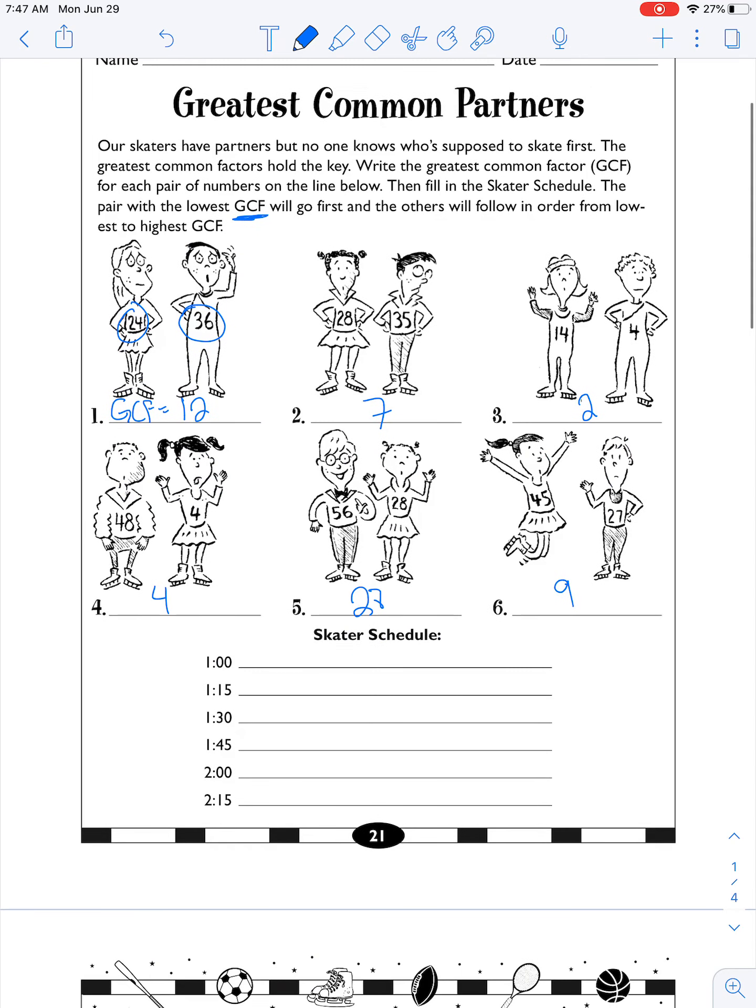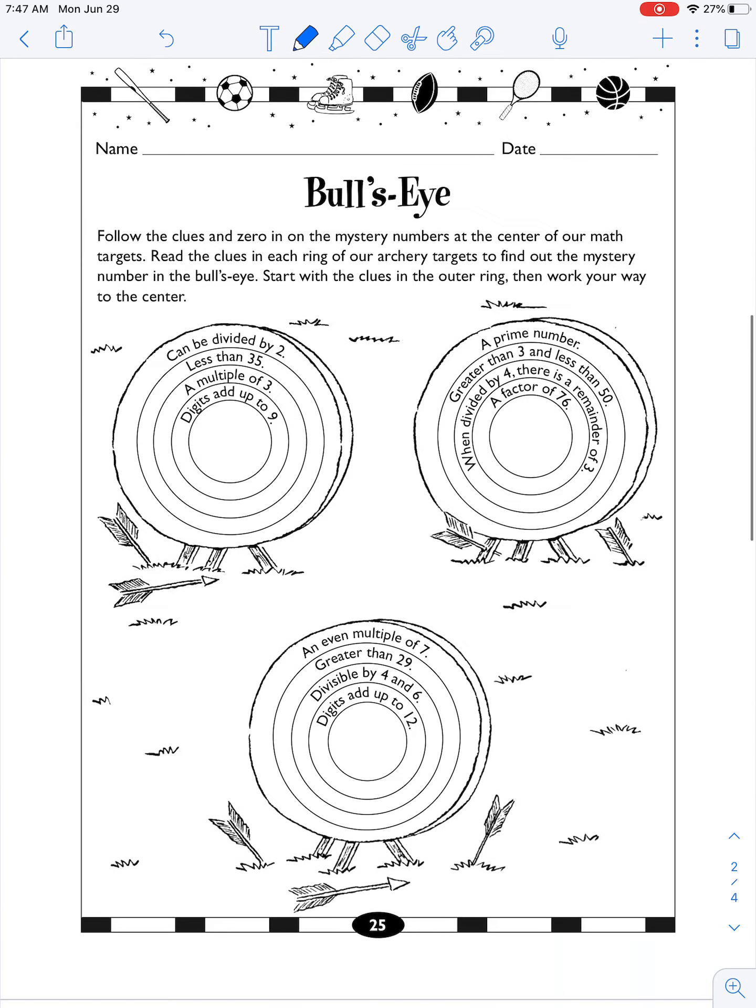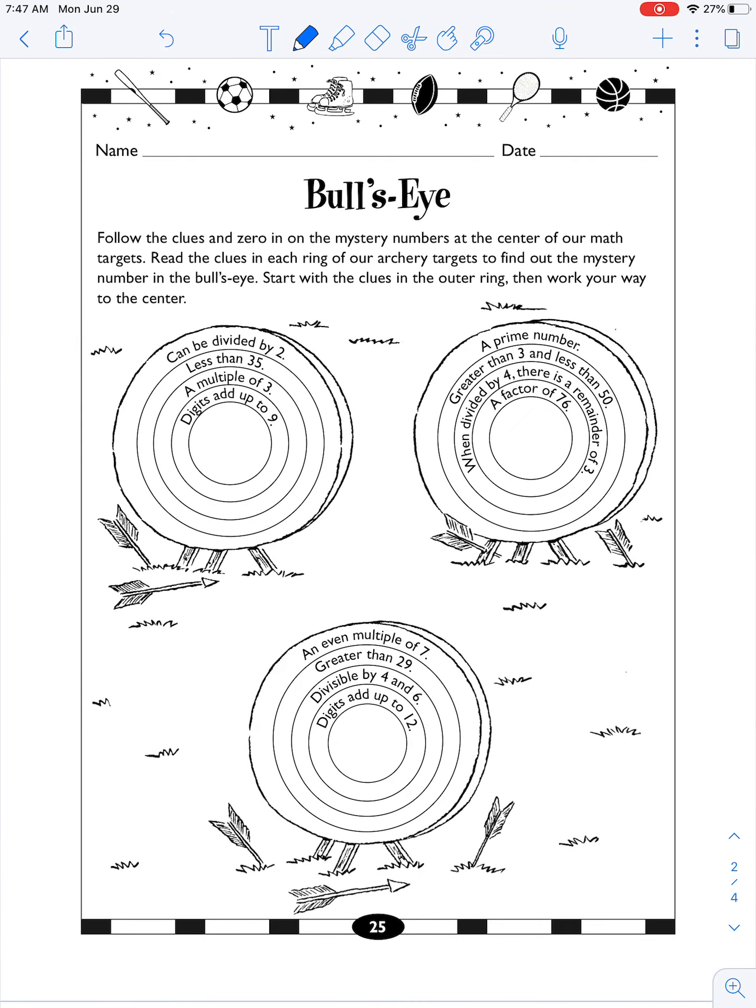And 45 and 27 would be 9. Okay, so now we have to figure out the person who goes the lowest goes first. So this one's the lowest, so pair 3 goes first. Then the next lowest would be 4, which is also pair 4. Then next would be 7, which is pair 2. Next is 9, which is pair 6. And then 12, which is pair 1. And then 28 is the biggest one, which is pair 5.